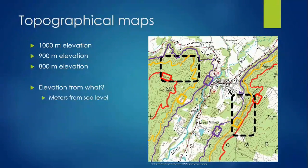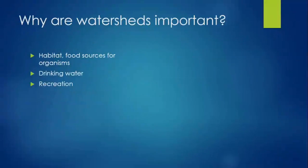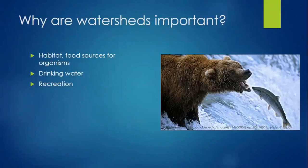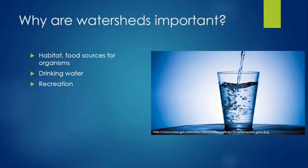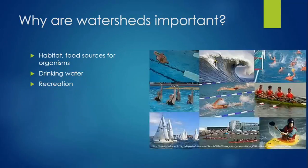In steep areas, water will tend to run off the land and into streams rather than soaking into soil. Watersheds are important for humans and nature alike. Watersheds provide habitat and sources of food for other organisms. Grizzly bears depend on watersheds for food sources such as salmon, and salmon rely on healthy watersheds for high quality habitats that they require. Our drinking water flows through watersheds, and the quality of the watershed influences the health of the water. Humans also have a variety of sports and pastimes that rely on rivers and lakes.